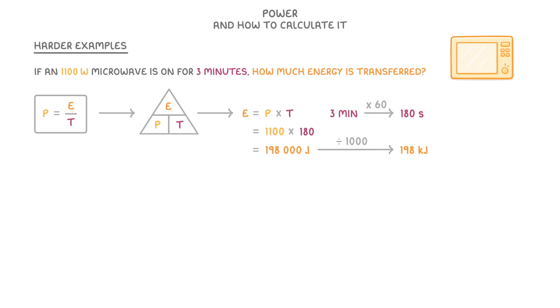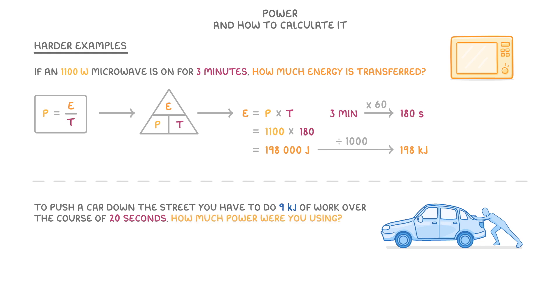As a last example, imagine that to push a car down the street, you have to do 9 kilojoules of work over the course of 20 seconds. How much power were you using?